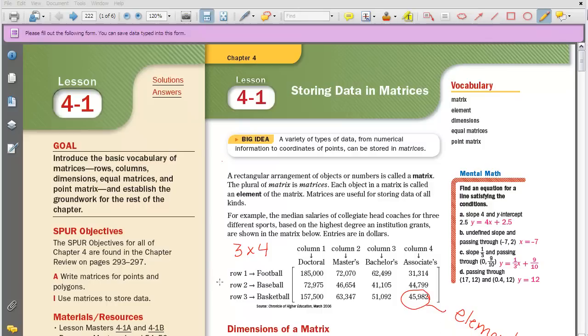Now we need to talk about dimensions. Dimensions of our matrices are written row by column. So this matrix would be a three by four matrix, because there are three rows by four columns.